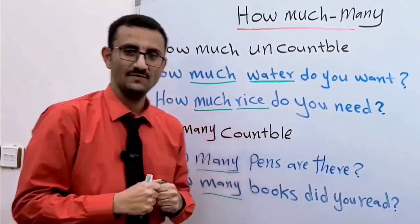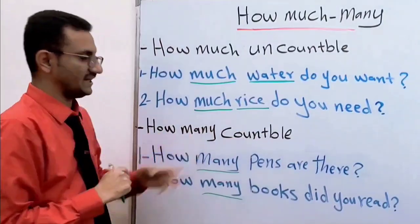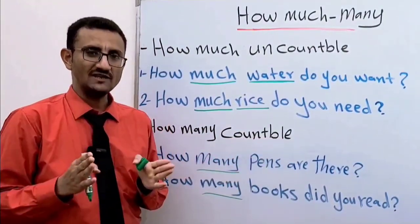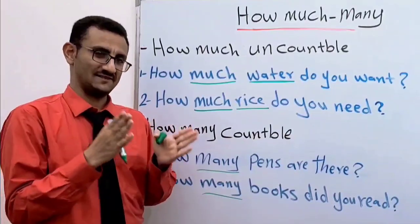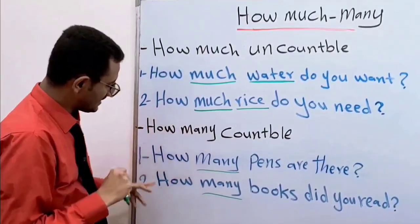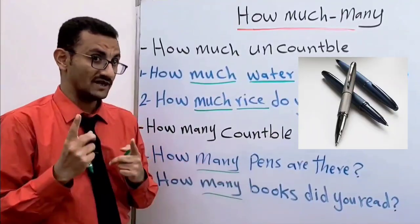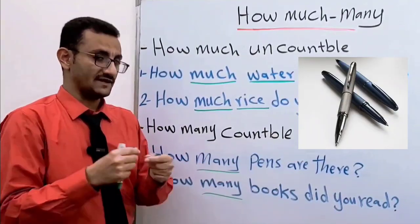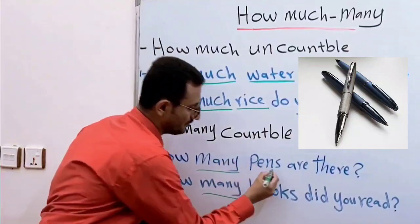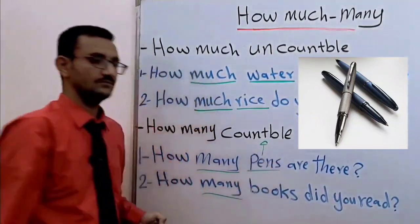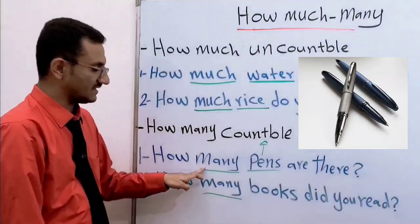Now, 'how many' is used with countable nouns. نستخدم 'how many' مع الأسماء المعدودة. For example, how many pens? Can we count pens? Yes. So pens here is a countable noun. Therefore, it comes with 'how many'.